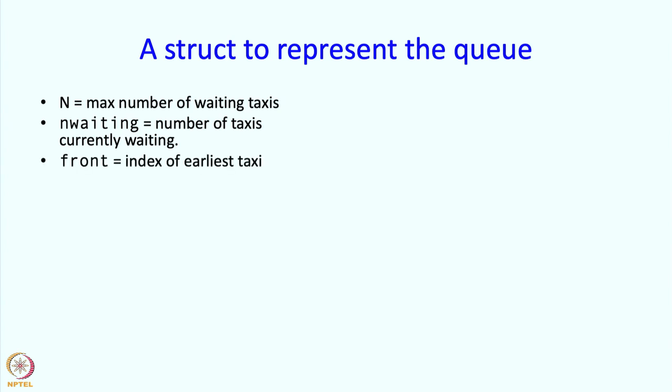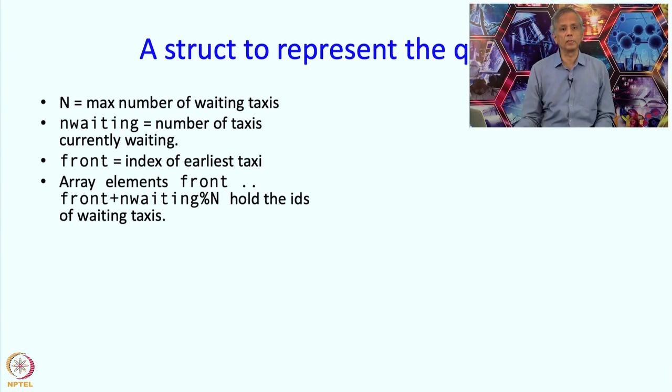First of all, a structure to represent the queue. N is the maximum number of waiting taxis. N waiting is the variable which we're going to need to keep track of the number of taxis currently waiting. Front is the index of the earliest taxi in the array that we're going to keep.